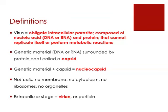We're going to call the genetic material just that when we talk about viruses, because it can be one of two different types. You'll also hear me use the term virion — a virion is just another term for a virus when it is outside of a living cell, the extracellular form of a virus. You'll also hear me call viruses particles, and that's because they are not cells.